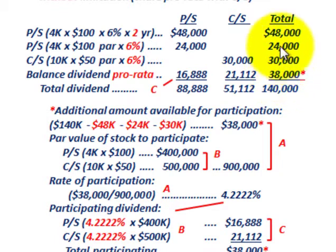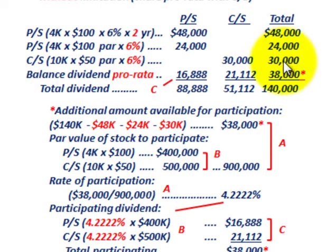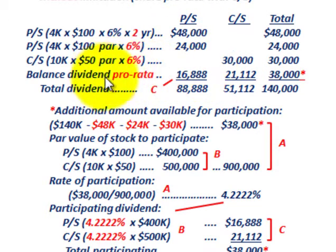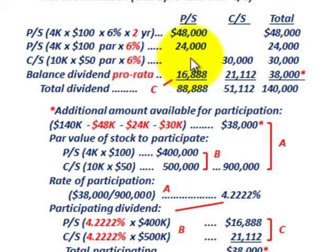The key was how we allocated based on that dividend rate for both preferred and common stock, and then when we got the remaining $38,000, we allocated that between preferred and common stock on a pro-rata basis. Remember, this example was fully participating preferred stock with cumulative dividends in arrears. That takes care of calculating preferred stock dividends where it's both cumulative and fully participating.